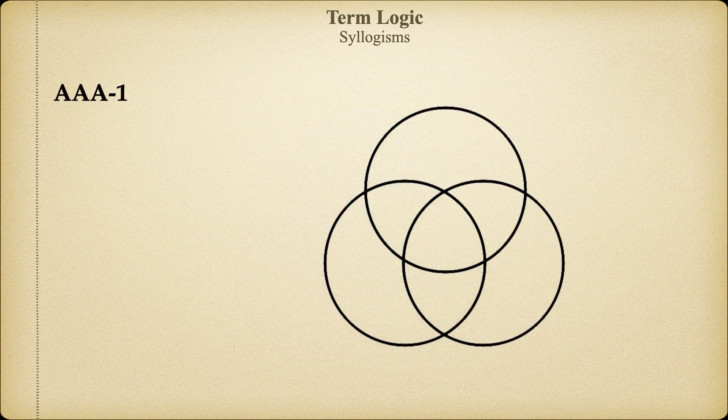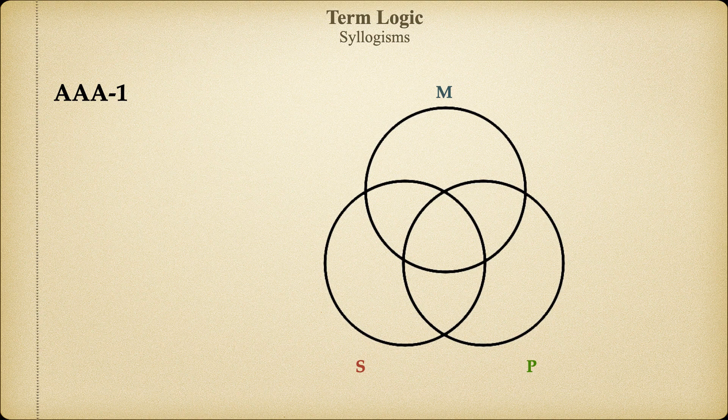Let's start with an AAA Figure 1 categorical syllogism. First, let's note what each circle in the diagram represents. We're using the letters S and P to represent the subject and predicate of the conclusion, which are the minor and major terms respectively. M will represent the middle term. Next, let's write out our argument in standard form.